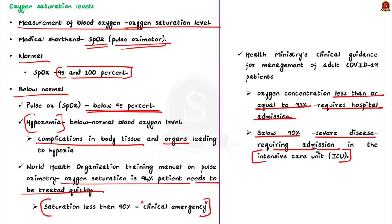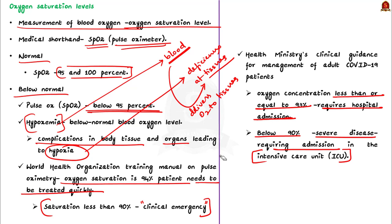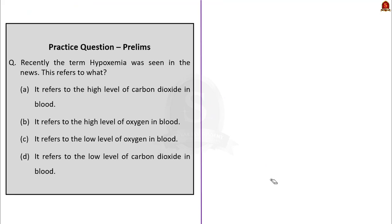Note that hypoxia and hypoxemia are not the same. Hypoxia is oxygen deficiency at the tissue level, while hypoxemia is reduced oxygen concentration in the blood. Hypoxemia can lead to hypoxia because blood delivers oxygen to tissues — when blood oxygen is lower it can consequently lead to deficiency at the tissue level. Hypoxia is a condition which can turn fatal in COVID pneumonia cases.